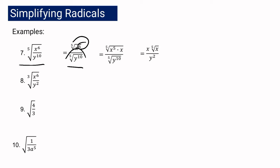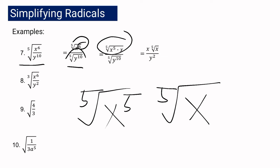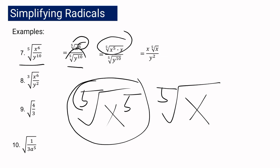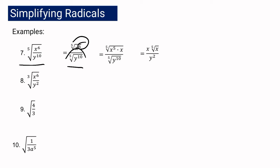Then we simplify: the 5th root of x to the 5th equals x, since the index and exponent are the same by law of radicals number 1. Then we write the 5th root of x for the remaining factor. For our denominator, we divide 10 by 5 to get y squared. So the final answer is x times the 5th root of x, all over y squared.